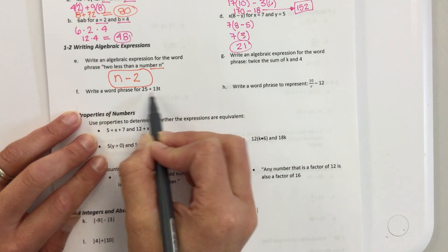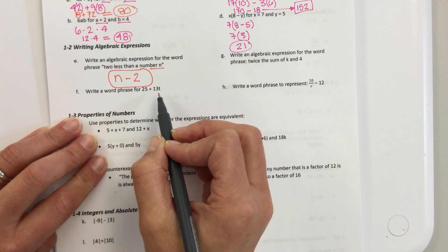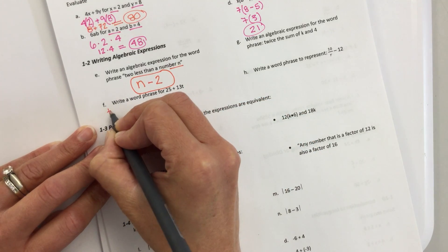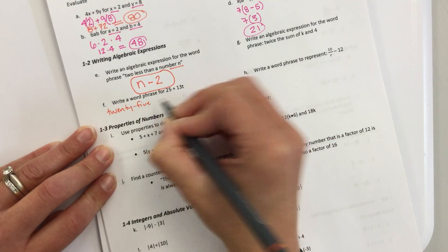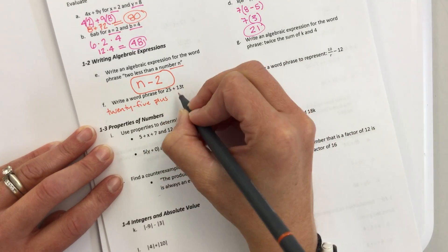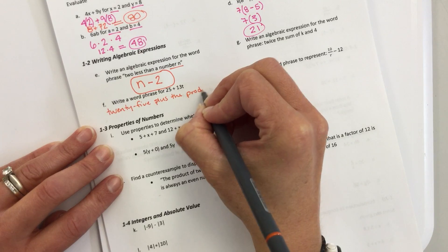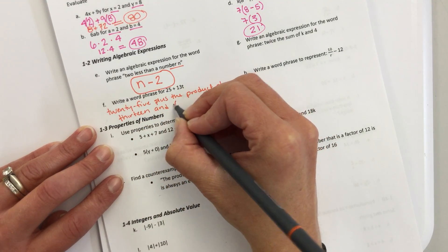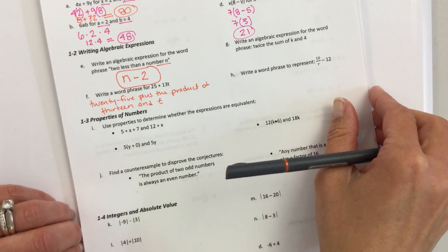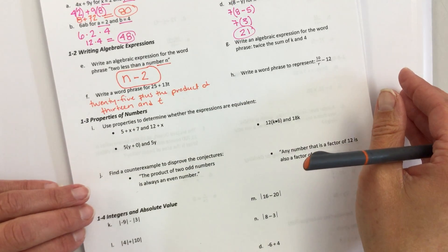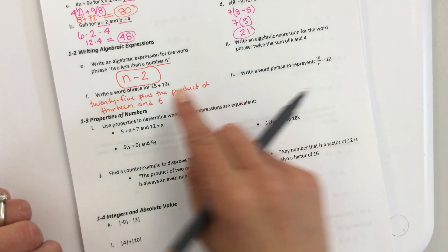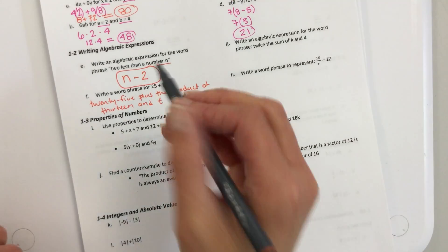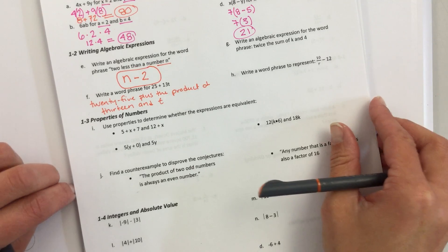Letter F, it says write a word phrase for 25 plus 13t. You can't just write 25 plus 13t. You have to write 13 times t. So, you would write 25, and you could say plus, or you could use different words. Plus, and you could say the product, the product of 13 and t. You could say 13 in a variable. You could list this more than one way.